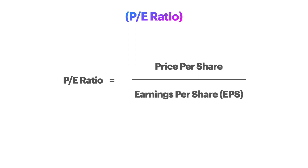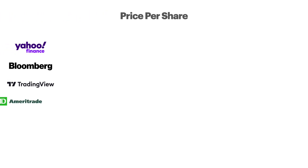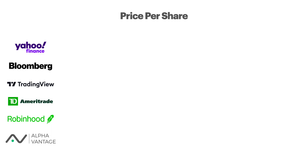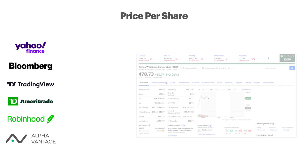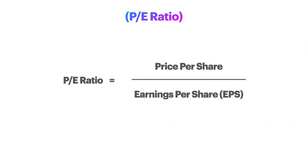Let's break down the two components of the ratio with an example. First, the price per share. To find the price per share, you can simply go to any finance website or brokerage to find the latest quote. Or even better, you can use the Alpha Vantage API. You can see here that the latest quote for a Costco share is $478.73. We will take this number and plug it into the numerator of our equation.